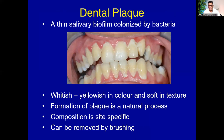Dental plaque is a thin salivary biofilm colonized in your mouth with bacteria. It is available in anybody's mouth in different quantities — if your oral hygiene habits are good, the presence of dental plaque is minimal. If you put a toothpick inside your mouth between the tooth and gums, you can pick this dental plaque — it is whitish or yellowish in color and soft in texture. Plaque formation is a natural process, its composition is site-specific, and it can be removed by brushing.